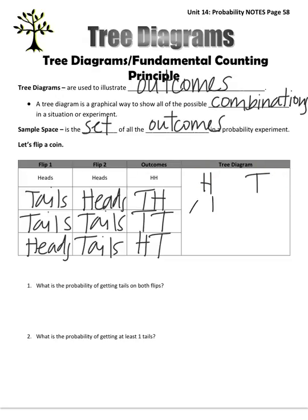So this is one flip. This would be the second flip. So our first flip, this heads, heads, would be represented right here. The tails, heads, would be here. Tails, tails. And heads, tails.